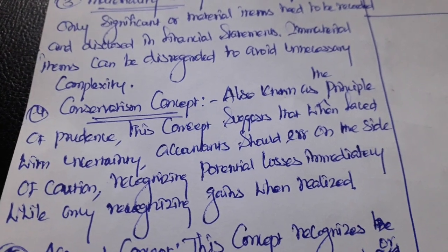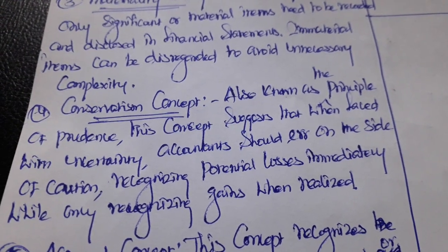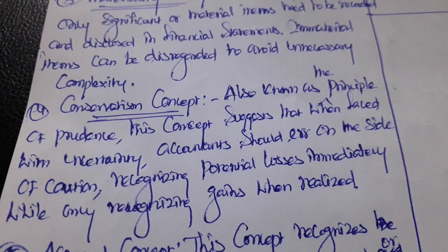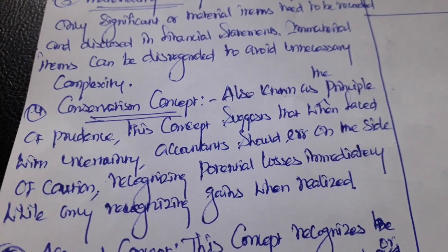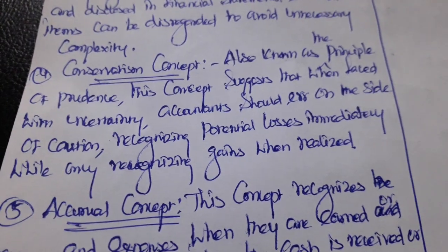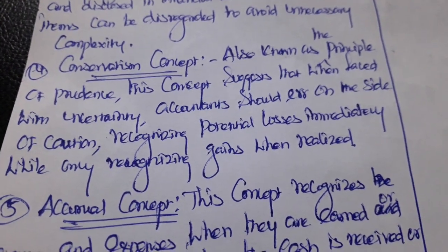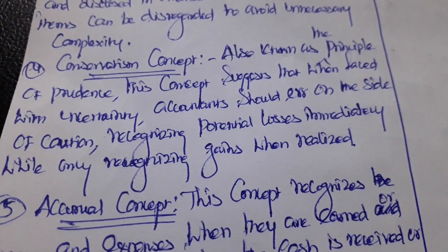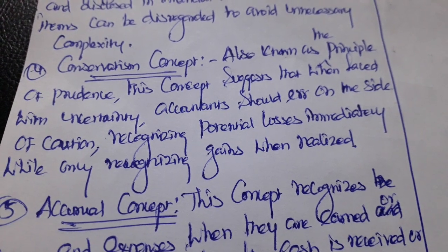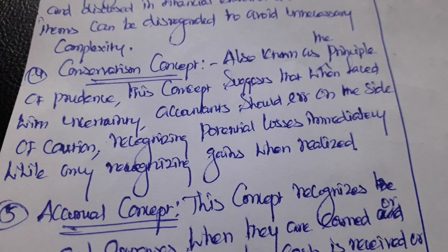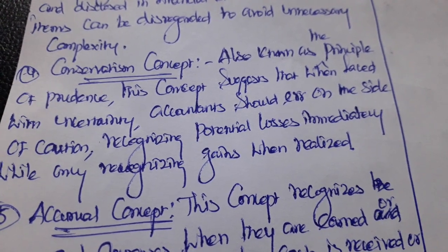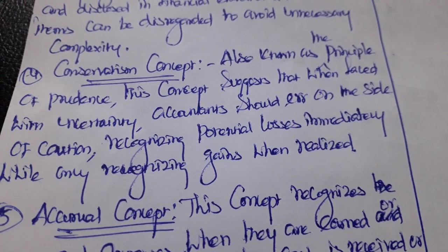Conservatism, also known as the principle of prudence, guides us that when faced with uncertainty, accountants should err on the side of caution. They should recognize potential losses immediately but will only recognize gains when they are realized.